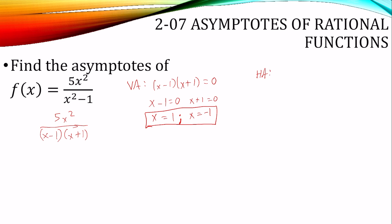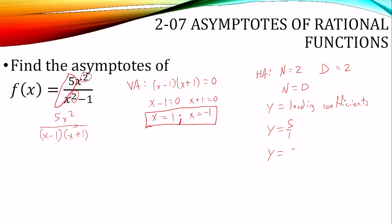For our horizontal asymptote, the degree of the numerator is 2 and the degree of the denominator is 2, so n equals d. That means y equals the ratio of leading coefficients. The leading coefficients are 5 over 1, so it's y equals 5. Again, it's an equation of a line, so it is y equals 5, not just the number 5.